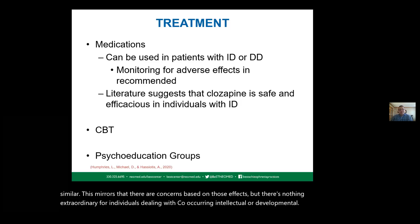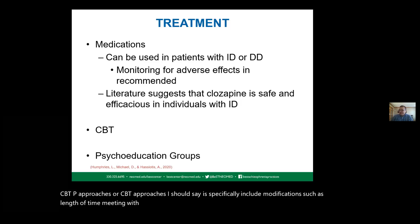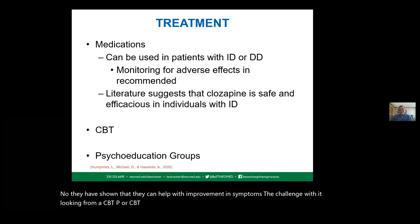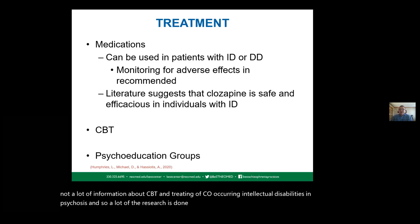CBT approaches, with modifications such as length of time, meeting location, and session structure, have shown improvements in symptoms. The challenge is there is not a lot of information about CBT for treating co-occurring intellectual disabilities and psychosis — a lot of the research is done in small case studies — but they have been shown to be effective and appropriate.